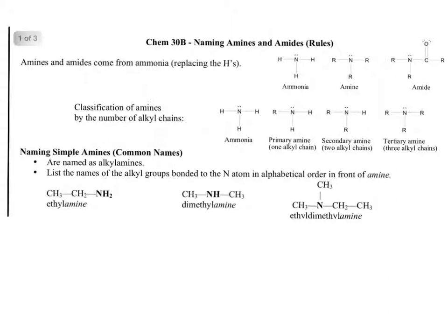We can name amines by common names and also by IUPAC names. With simple or common names, we list the alkyl groups and then add the word amine. For example, one ethyl group gives ethylamine. With two methyl groups, both are methyl, so we call it dimethylamine. With one group here, one here, and two going the other way, we name in alphabetical order — calling that ethyl dimethylamine.